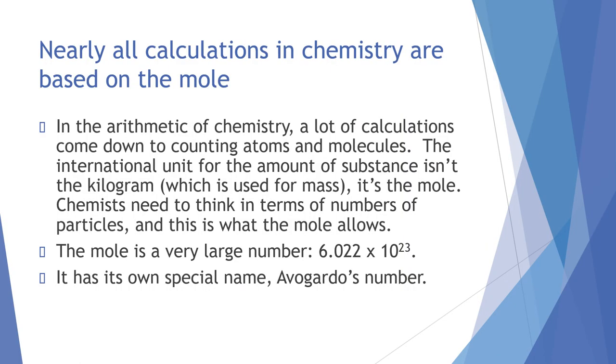Nearly all calculations in chemistry are based on the mole. The general idea is that chemists like to think in terms of particles, and this is what using this number will allow us to do. The mole is a specific number, 6.022 times 10 to the 23. It has its own special name, and it's called Avogadro's number.